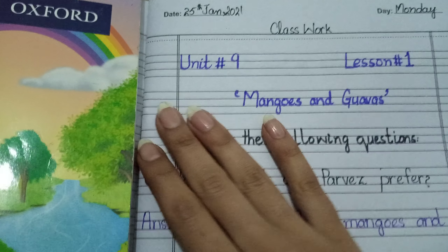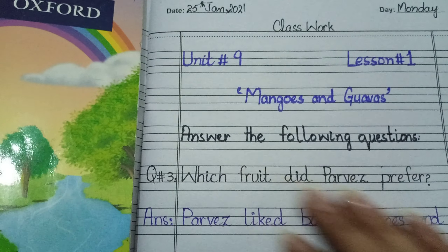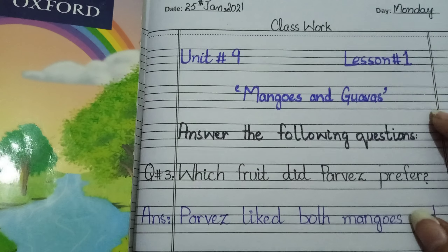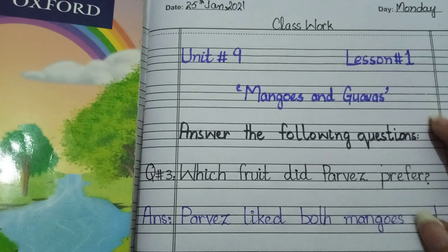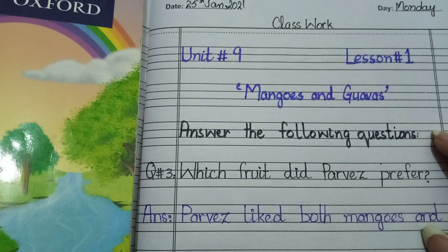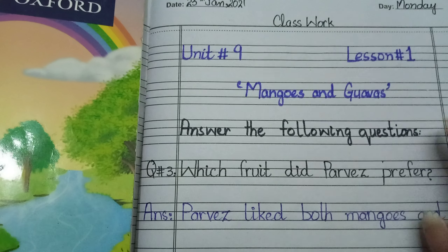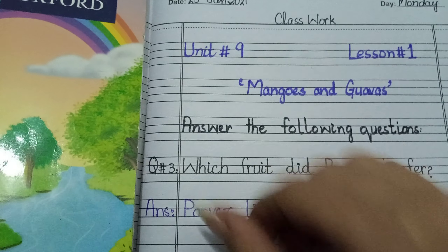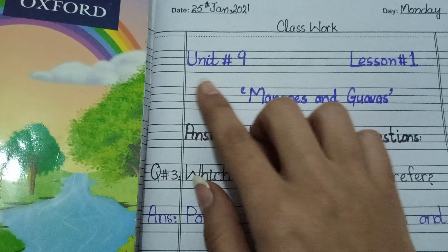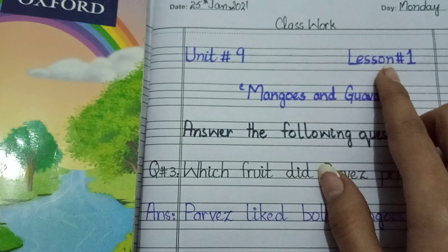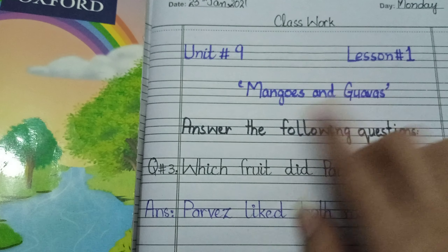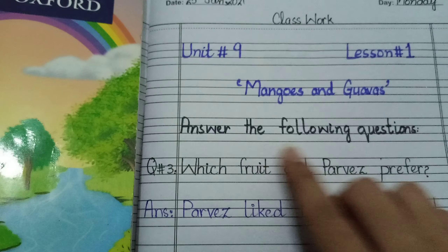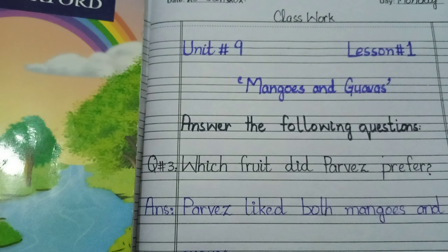We were done with unit number 9, question number 1 and 2. Now we are doing question number 3 and 4 of chapter number 9, lesson number 1: Mangoes and Guavas. Write unit number 9, lesson number 1, Mangoes and Guavas. Answer the following questions.